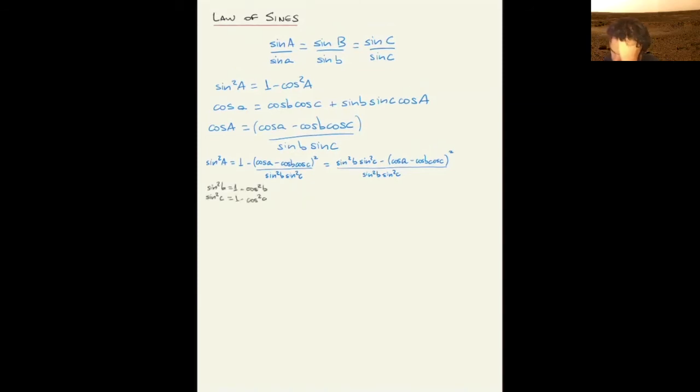So that becomes sine squared of a equals 1 minus cosine squared of b times 1 minus cosine squared of c minus cosine of a minus cosine of b cosine of c squared, and all of that divided by sine of b squared times sine of c squared.